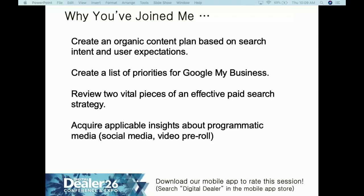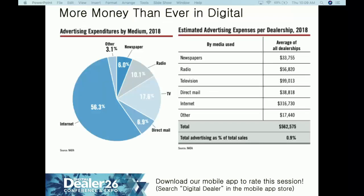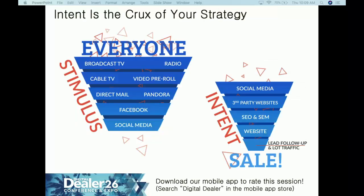We're going to talk about applicable insights about programmatic media — that's Pandora, video pre-roll, social media. Content is about the message and the channels you use to deliver it. NADA released 2018 stats showing 56.3% of an average dealer's spend is in what they call 'the internet,' so more than half your budget is going into digital marketing. That's why we're focusing on content for your digital assets.